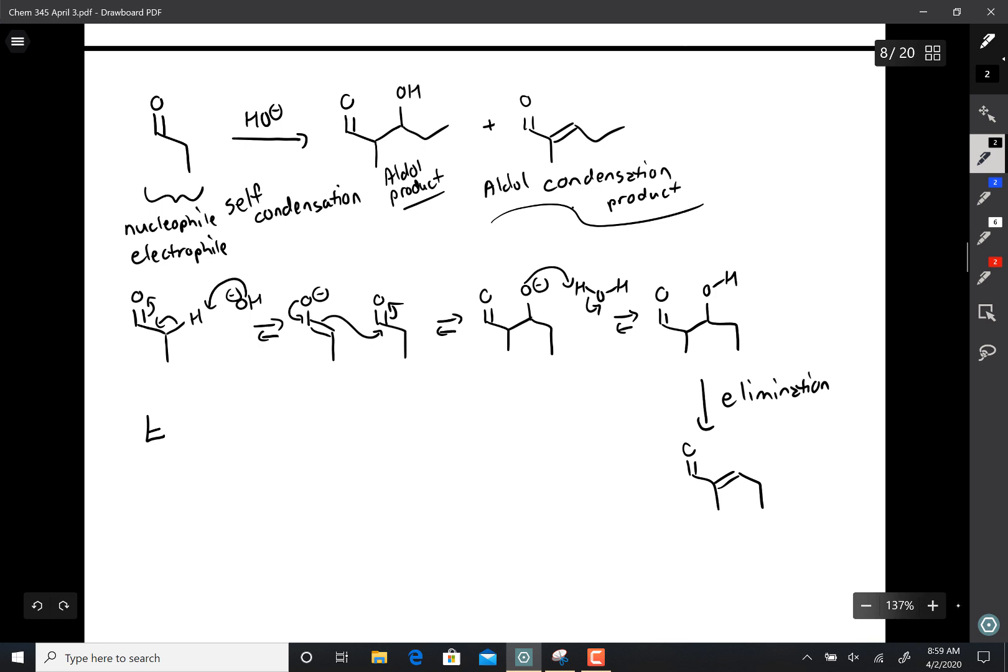Now we've talked about elimination reactions in Chem 341. We had two versions. We had the E1 version where the leaving group leaves, then you take the beta hydrogen off. And this is the mechanism in acid-catalyzed aldols. But it's not the mechanism in base-catalyzed, because the E1 reaction involves a carbocation and carbocations don't like to be formed in base.